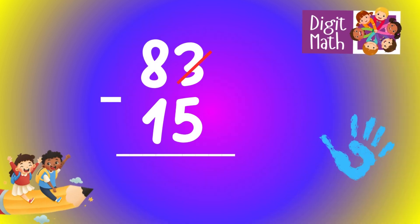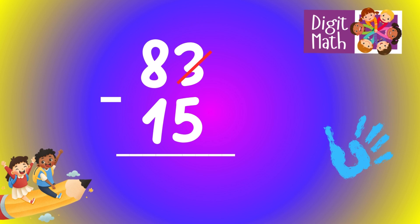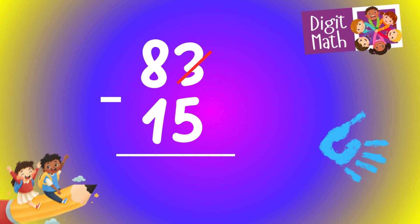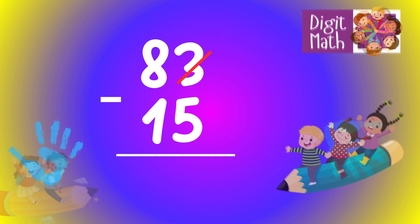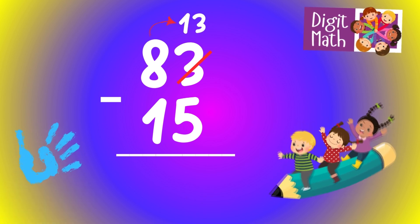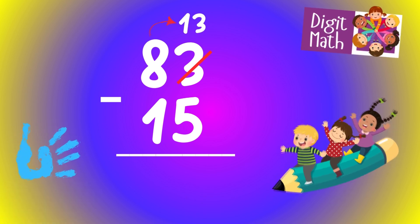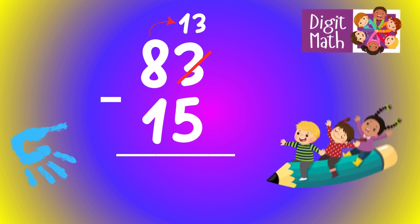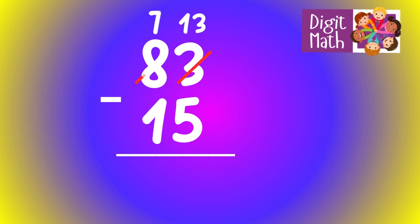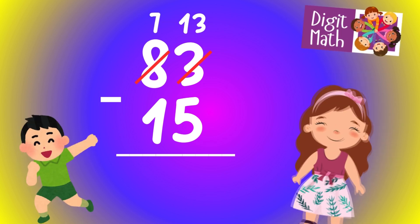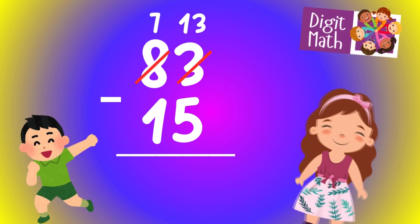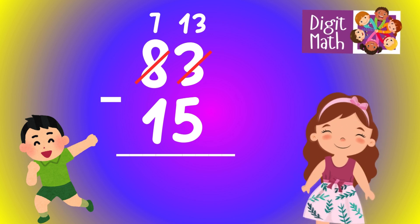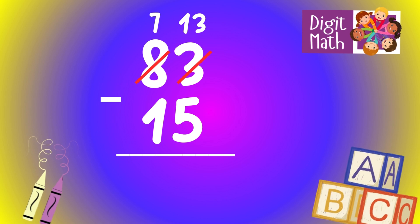Let's go to the answer. In the units column, we have 3 minus 5. Since it's not possible to subtract 5 from 3, we need to borrow from the tens column. In the tens column, we have 8. We take 1 from the tens, leaving 7 in the tens column, and turning the units column into 13. Now, we have 13 in the units column. Subtract 5 from 13, which equals 8.